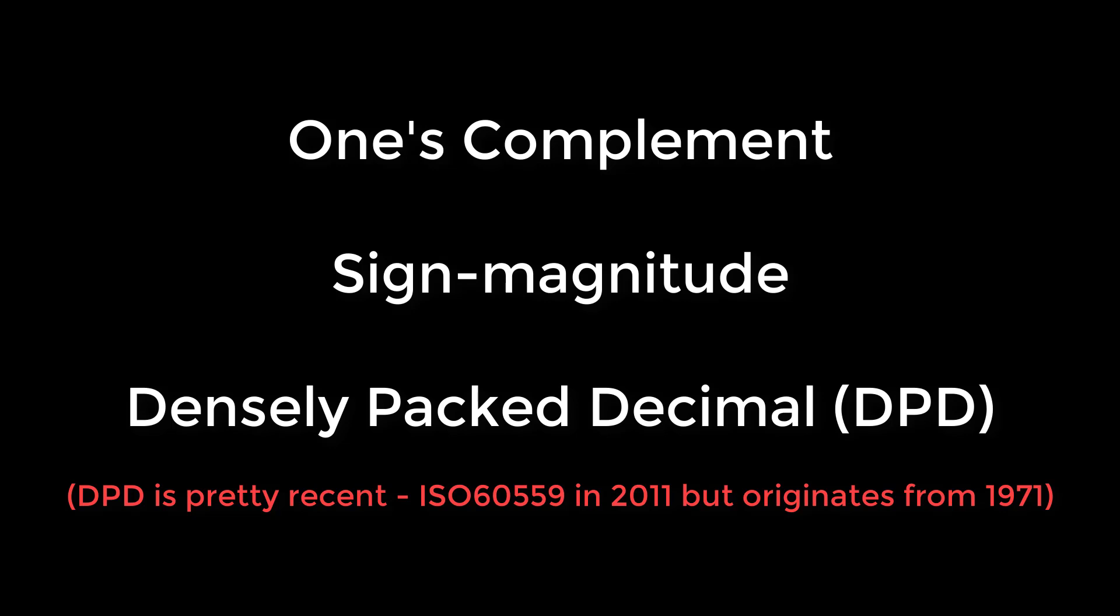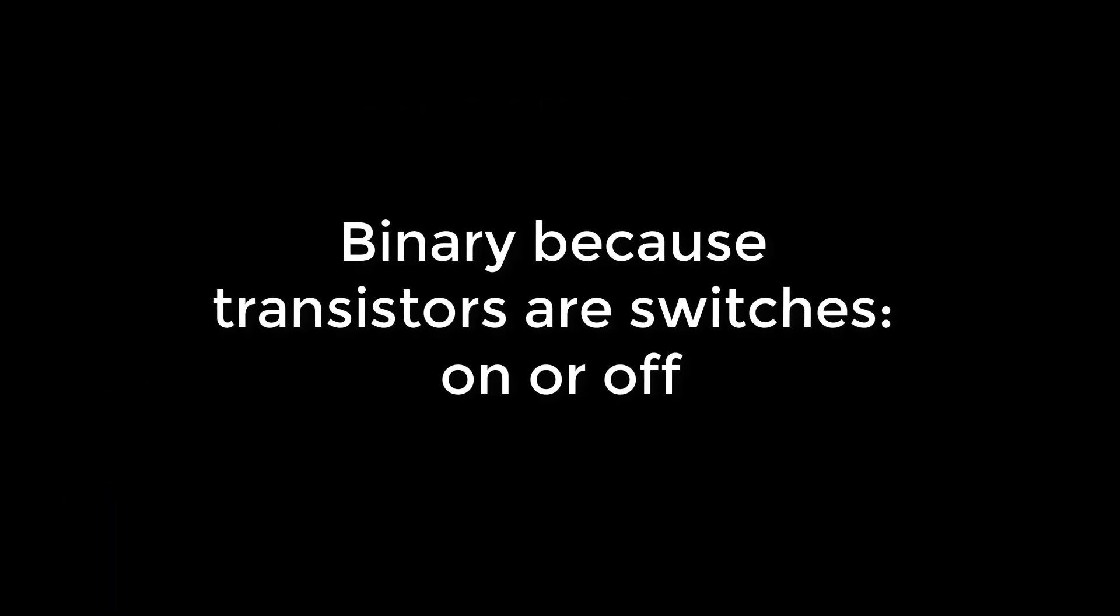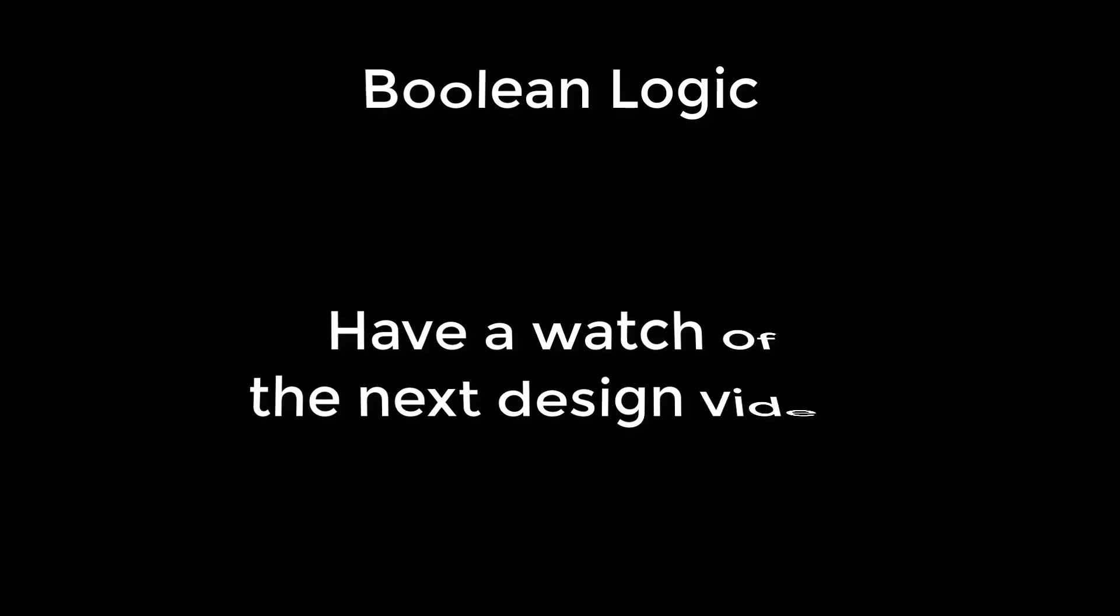Okay, so we know how to represent numbers in binary, and we know we used binary because that is what electronic circuits can easily represent. So let's look at some circuits, right? Not quite. There's a little more knowledge we need before we can do anything useful in circuits, and that knowledge is boolean logic, which we'll look at in the next design video.